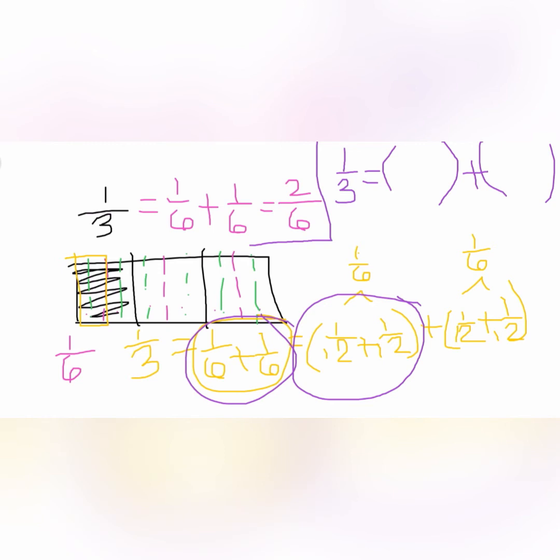So we're going to multiply two times one-twelfth, and then we're adding two times one-twelfth. We multiply by two because, like I said, we need two-twelfths to equal one-sixth, and then we add it to itself because we need two-sixths to equal one-third.